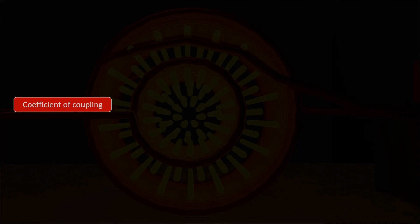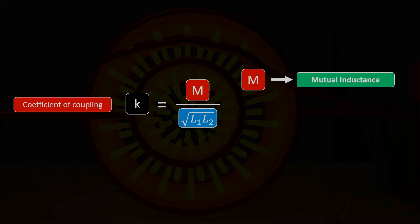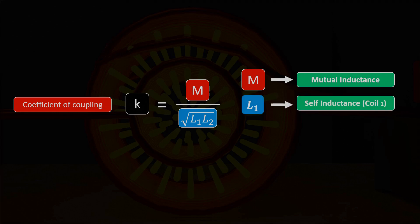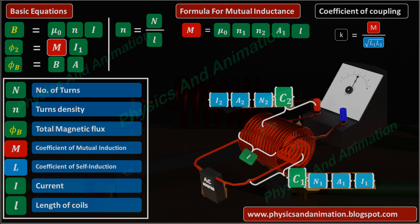Now let's look at the formula for coefficient of coupling, which we discussed earlier in the video. The coefficient of coupling K = M / √(L1 · L2), where M is mutual inductance, L1 is the self-inductance of the first coil, and L2 is the self-inductance of the second coil. From this formula, you can find the coefficient of coupling for different relative orientations of the coils. Thank you so much for watching.